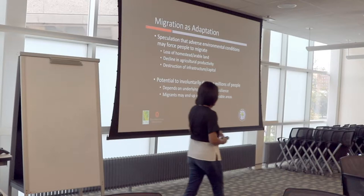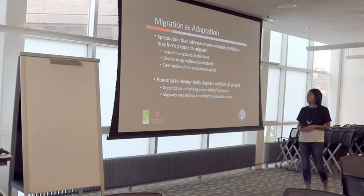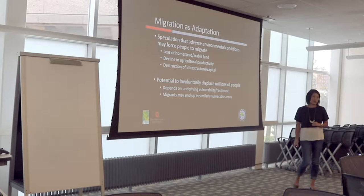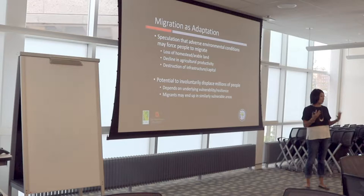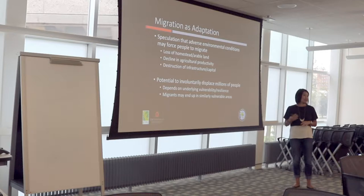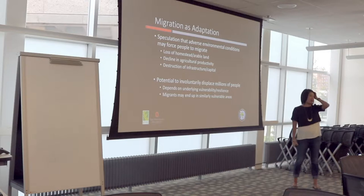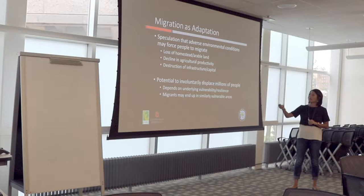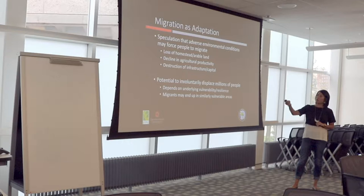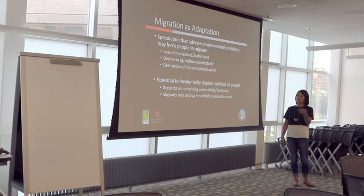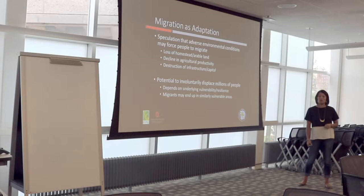This idea of migration and adaptation — similar to climate change now, but to environmental risk more generally — has been around for a while. There's speculation that adverse environmental conditions can force people to migrate. To some extent this can happen proactively, or it could be forced migration, with potential to involuntarily displace millions of people. This could occur for a variety of reasons: loss of land, destruction of infrastructure and capital, or for developing countries, a decline in agricultural quality. Even in the U.S., something like the Dust Bowl would have led to similar environmental migration.